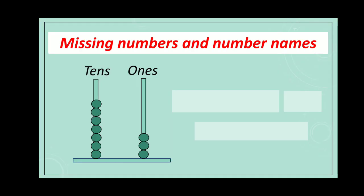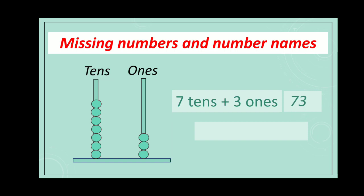Missing numbers and number names. In this abacus, the ones rod has one, two, three ones. And the tens rod has one, two, three, four, five, six, seven beads. So seven tens plus three ones makes the number 73. And the number name is seventy-three — S-E-V-E-N-T-Y-T-H-R-E-E.